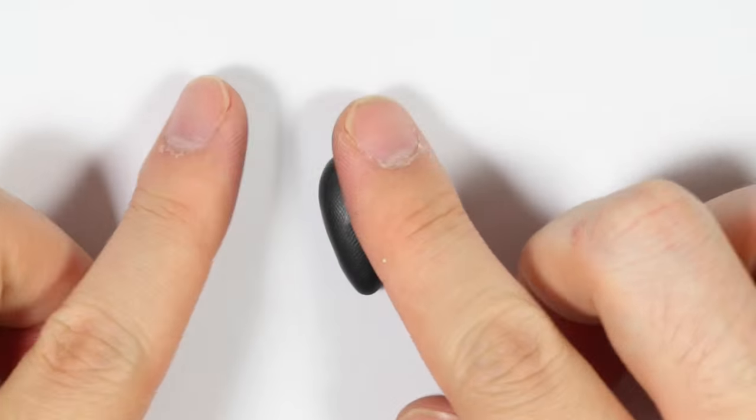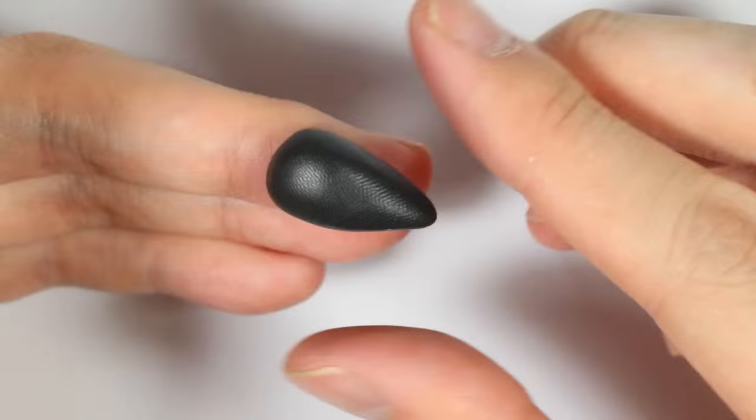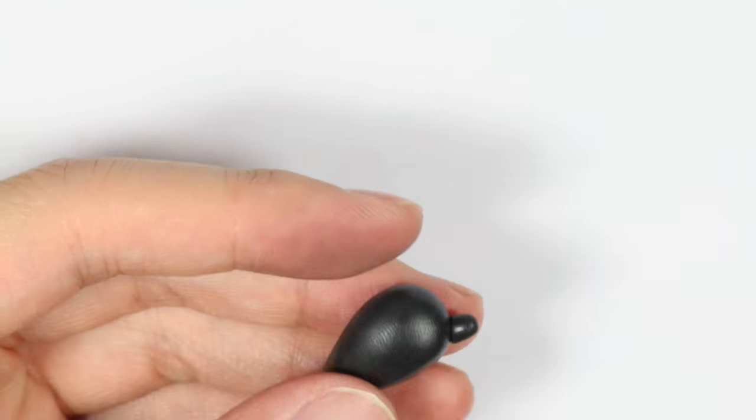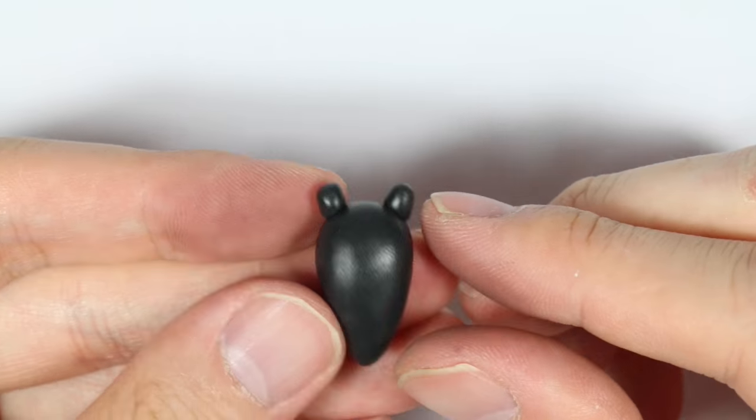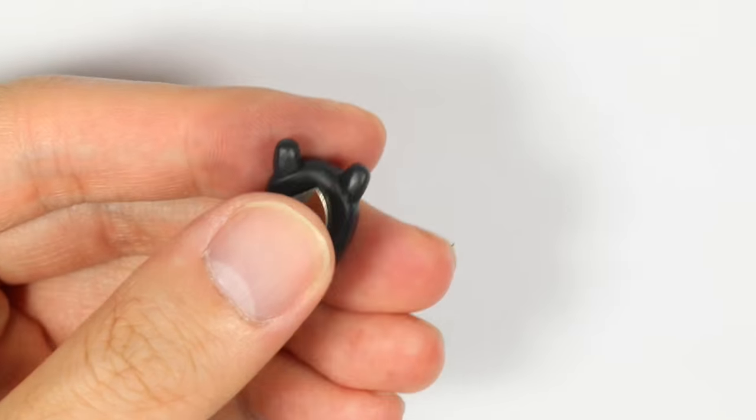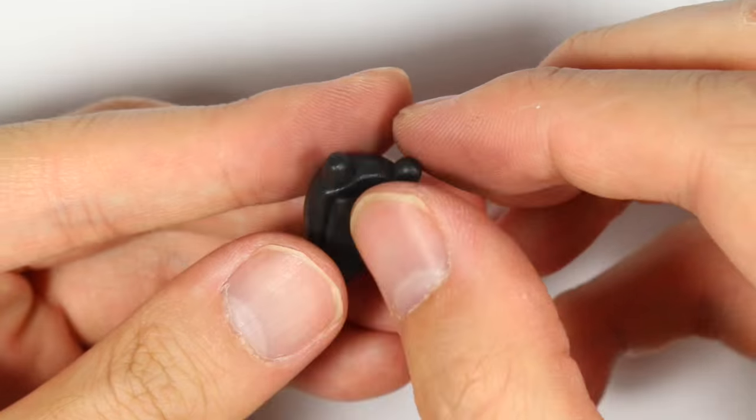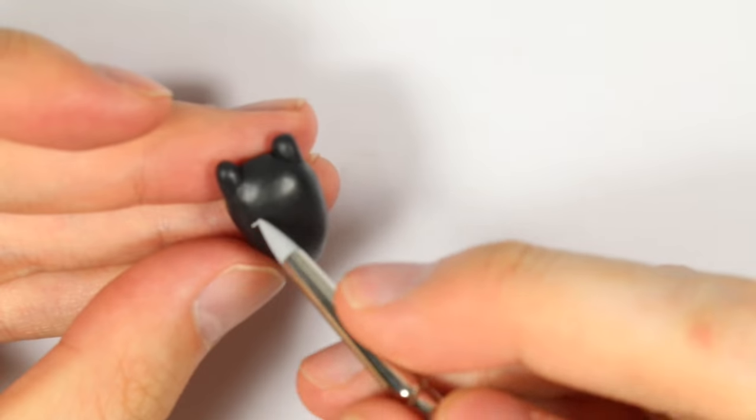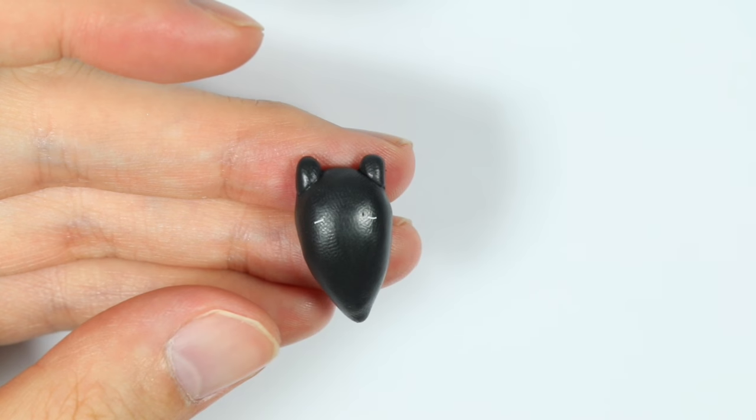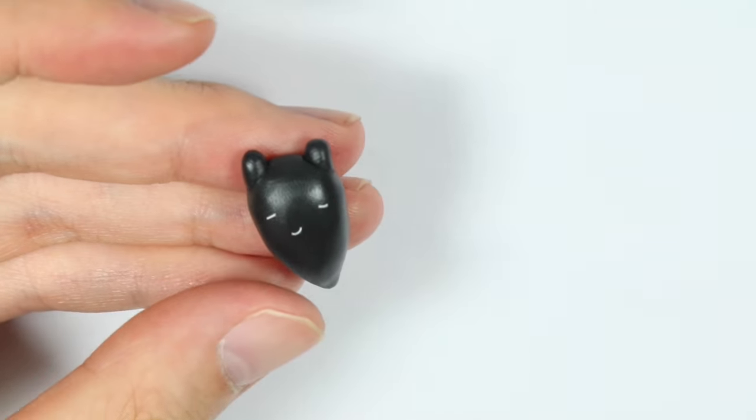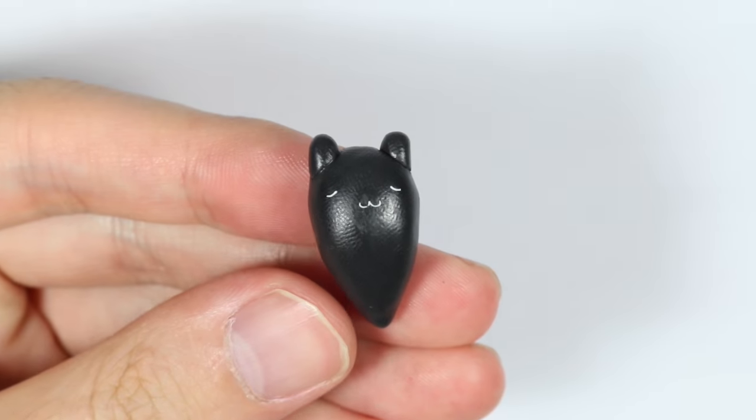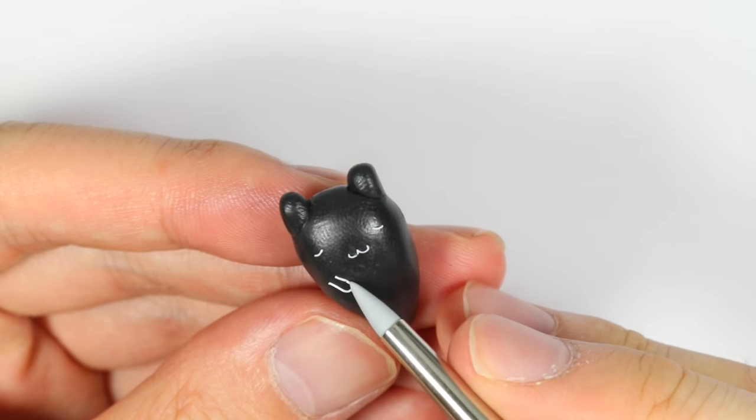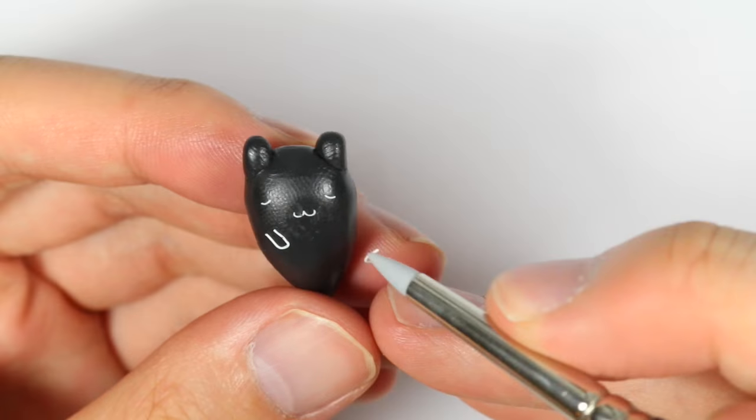For the seaweed cat, take some black clay and roll it into a raindrop shape. For the ears, add two fat cylinders, then add a magnet in the back. Using white clay, give it sleeping eyes and a W mouth. Then using white snakes of clay, make two arms by shaping them into U shapes.